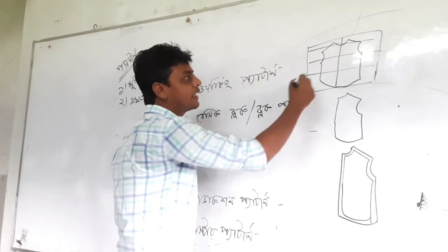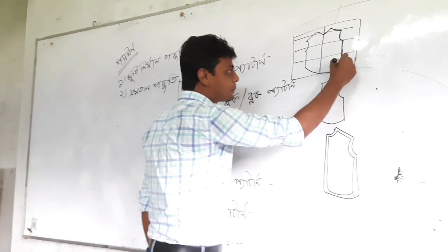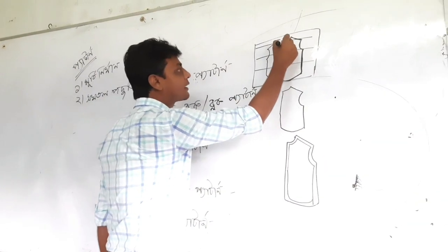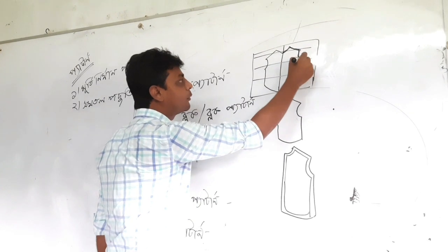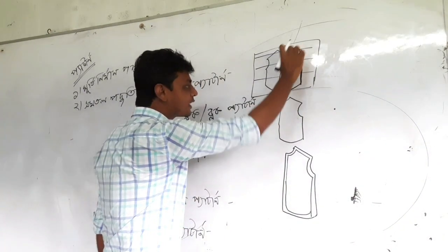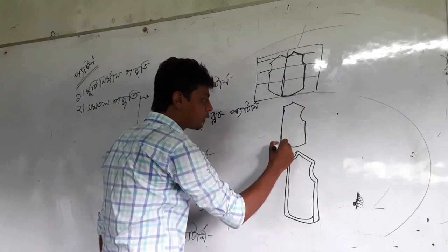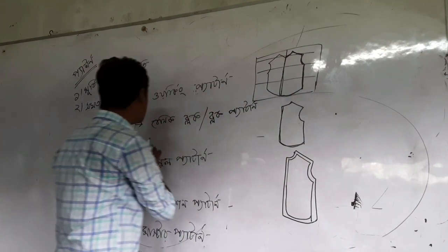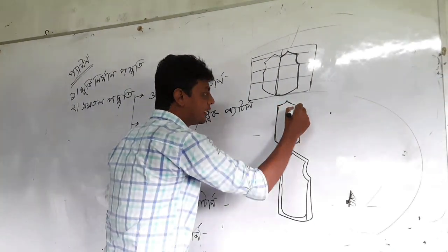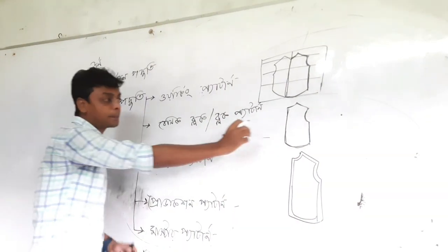This is the front part. The front part includes the neckline, the armhole, the cart, and the pattern. This is the same pattern. This is the basic block and the block pattern.